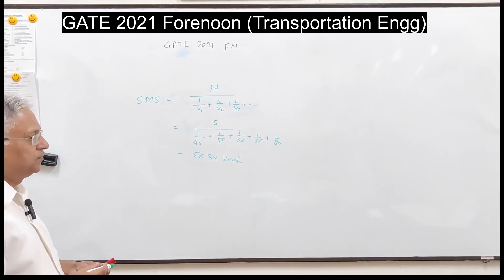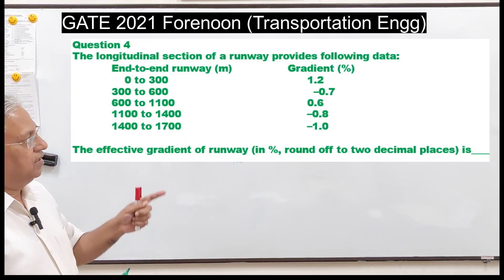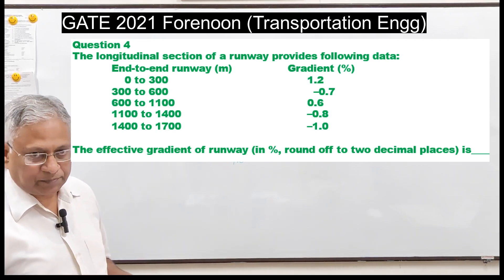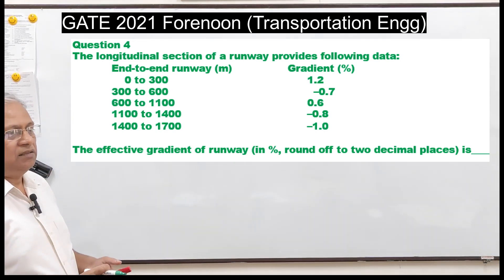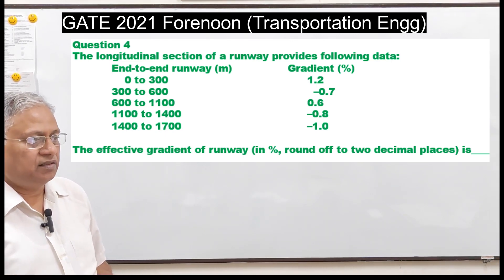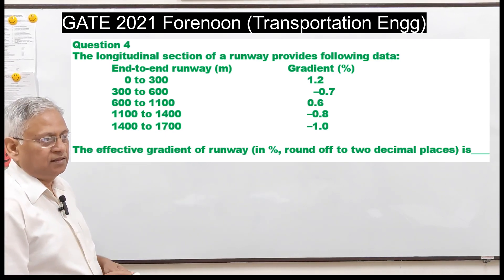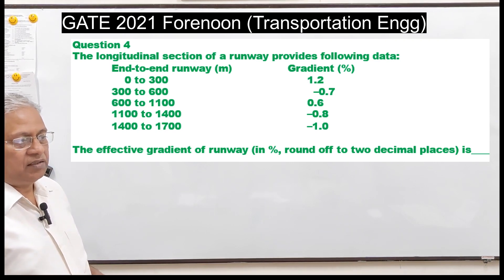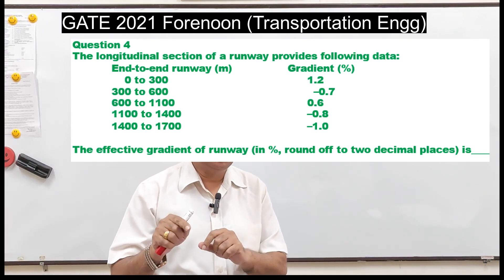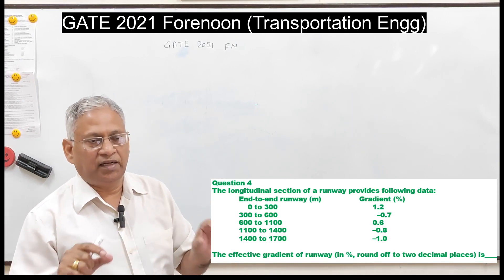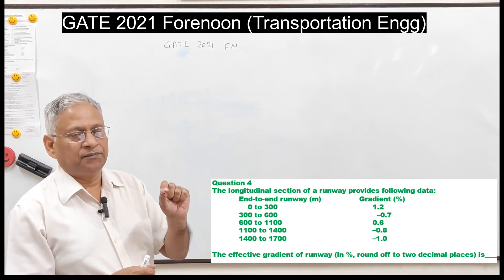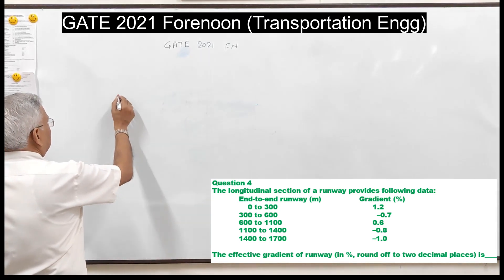Question four is on the longitudinal section of a runway, which provides data: 0–300 m at +1.2% gradient, 300–600 m at −0.7%, 600–1100 m at +0.6%, and so on. The effective gradient of the runway is the difference between the RL of the highest and lowest points divided by the total runway length. We construct a table of elevations at each chainage point.